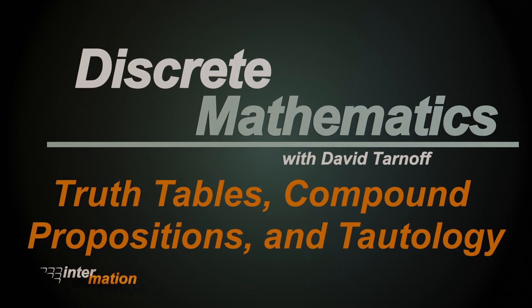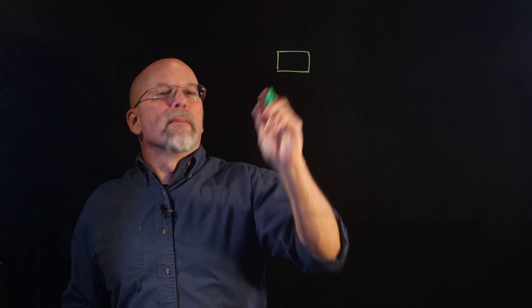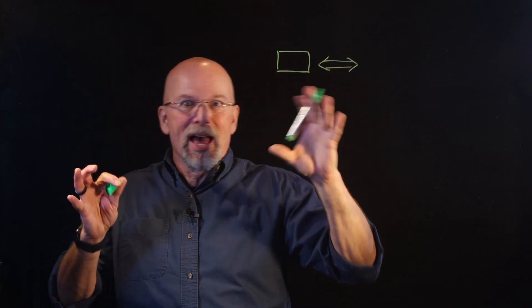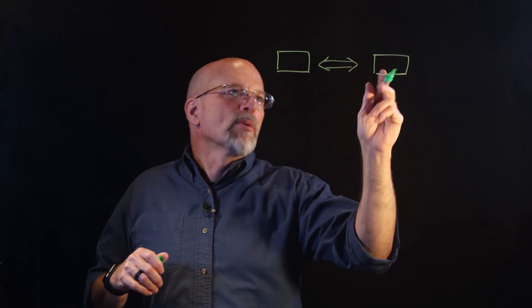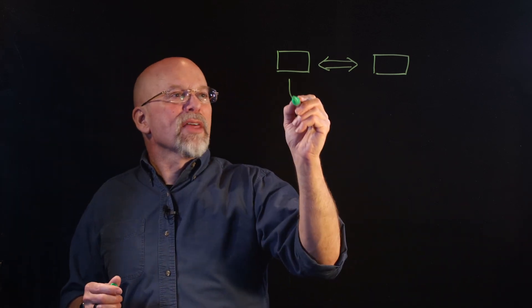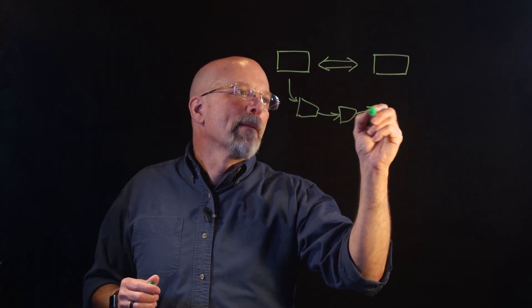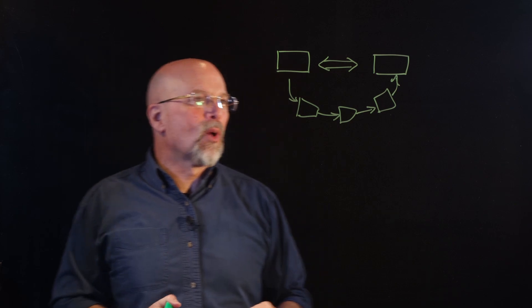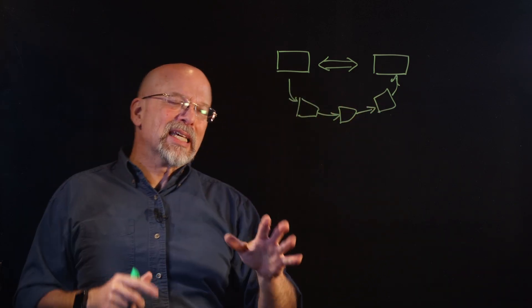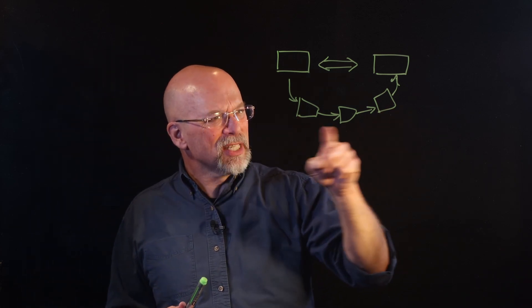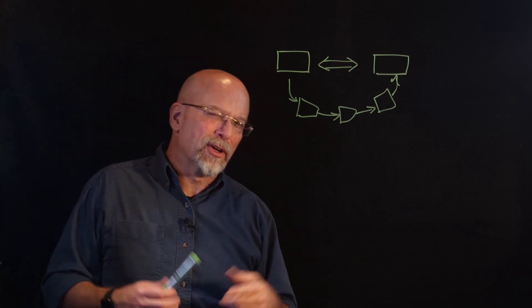Everybody loves doing proofs, right? In some of our earlier lessons, we went from a hypothesis — something on one side of an 'if and only if' or 'equals' — and what we're trying to do is show that those two things are equivalent. The hypothesis says we think this is true, and we went through a bunch of known laws, or known theorems, in order to show that equality, to show the 'if and only if.' Once we did that, this became one of the theorems we could work from. The problem is that sometimes it's not always intuitive how this path goes, especially for people new to math.